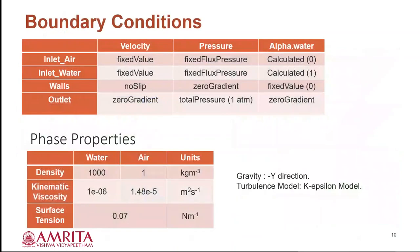Boundary conditions. The boundary conditions were given for the walls, air and water inlet. Coming to air inlet, fixed value for velocity, fixed flux pressure for pressure, and for alpha dot water it is calculated as 0. Whereas for water inlet, it will be fixed value for velocity, fixed flux pressure for pressure, alpha dot water is calculated as 1. For walls, there will be no slip condition for velocity. It is a zero gradient for pressure and alpha dot water will be fixed value. For outlet, zero gradient for both velocity and alpha dot water. Total pressure is calculated as 1 atmospheric pressure.